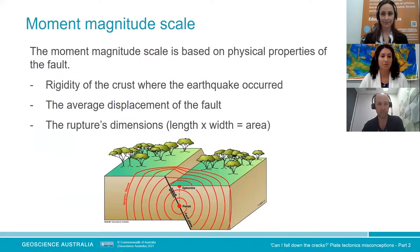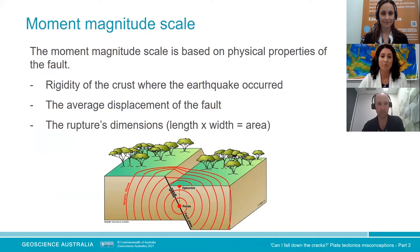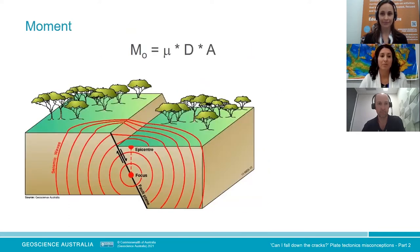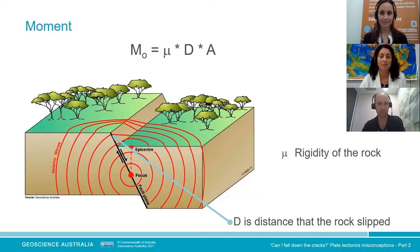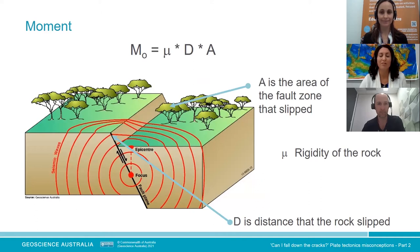The moment magnitude scale is really what we should be talking about. It's based on the physical properties of the fault — there are three components: the rigidity of the crust where the earthquake occurred, the average displacement of the fault, and the ruptured dimensions, meaning length by width giving the area. The moment itself is M₀ = μ (rigidity of the rock) × D (distance the rock slipped) × A (the area of the fault zone that slipped).